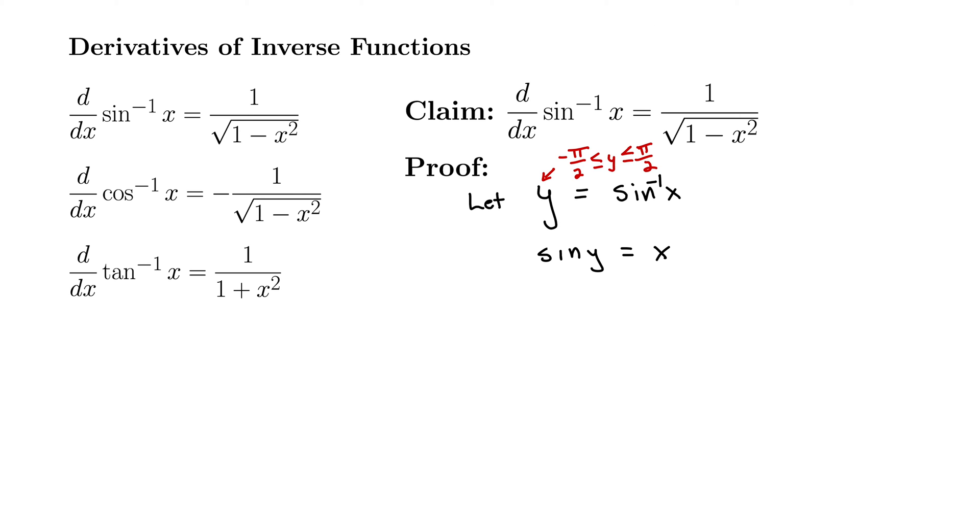When you do these proofs, I'm not as concerned about this aspect of it. But I want to be really careful with the domains and ranges the first time, just demonstrating for you how it goes. But I'm not as concerned about the domain and range arguments when you do your own proofs. So we're down to sine y equals x. Now let's take the derivative of both sides. So I'm going to take the derivative with respect to x of both sides.